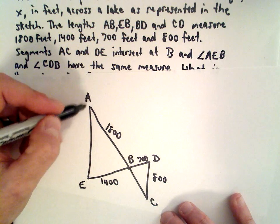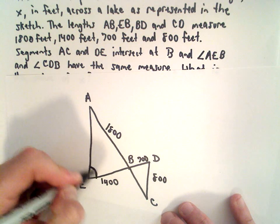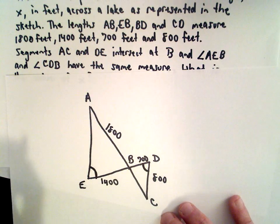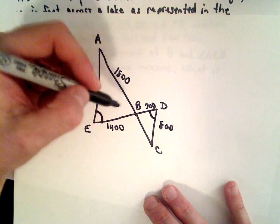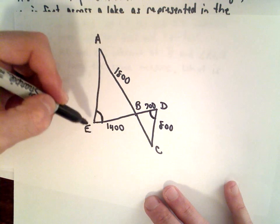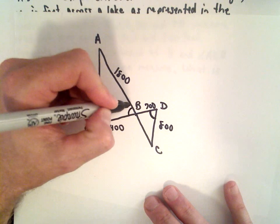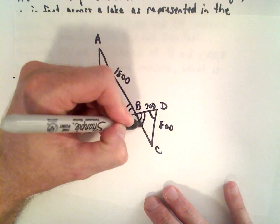So again, we're told that angle AEB, which is this angle here, and CDB, which would be this angle here, have the same measure. Now notice this angle here, angle EBA and CBD, those are going to be vertical angles, so those also have similar measures.